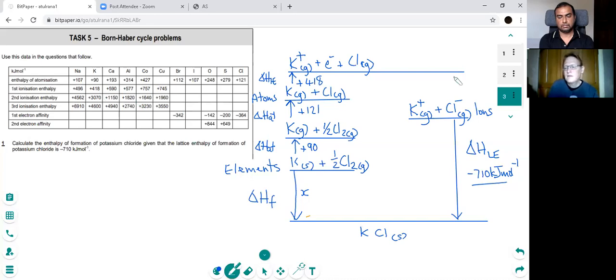And then the last enthalpy change here is Cl to Cl minus. And that's called electron affinity. Chlorine first electron affinity. And the chlorine first electron affinity is minus 364.